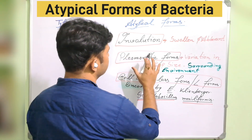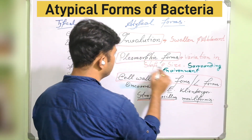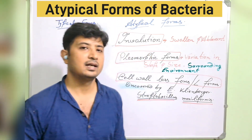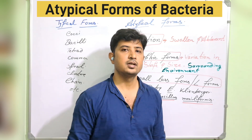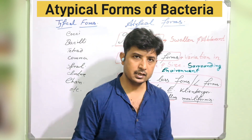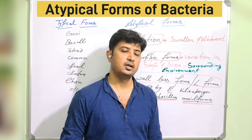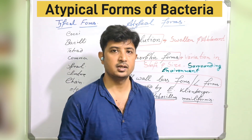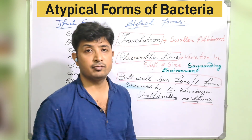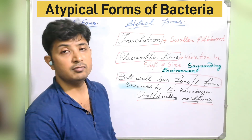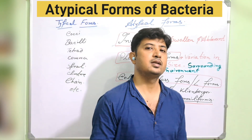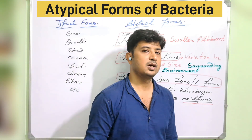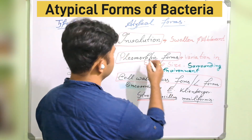The atypical forms are: involution forms, pleomorphic forms, and cell wall-less forms. Involution is the form where the bacterial cell gets swollen or aberrant — meaning it is not in its natural characteristics. For example, Bacillus subtilis is a bacilli-form bacterium, but somehow it shows a comma or spirilla form. That same bacterium gets destructured into an aberrant form that is not its characteristic — that is involution. When a cell is swollen and aberrant, totally deformed, it is called an involution form.